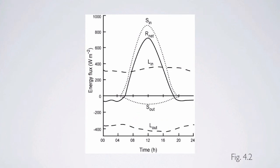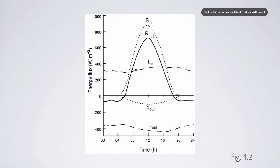What we want to understand next is essentially what controls how much energy comes into a place, how much gets lost in terms of shortwave radiation going out — how much is being reflected — and what determines how much longwave radiation both comes in and out of an ecosystem.